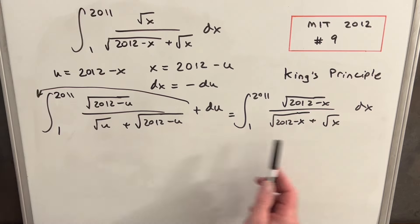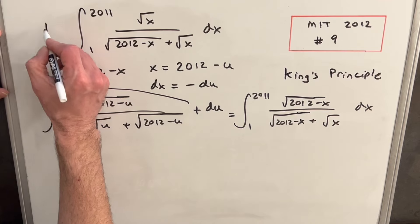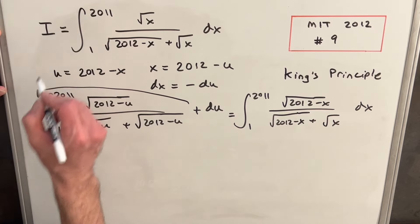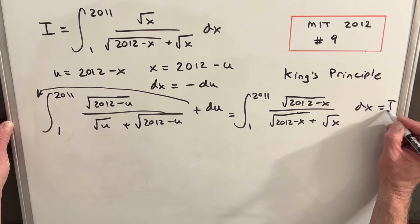Now with the rewrite, I did change the order here. I put the 2012 minus x to the front just to get it to look more like that. And now we're set up perfectly. Our original integral, we'll just call this i so we can keep track of it. All we've done is manipulate it all the way down to here. So this thing here is also i.